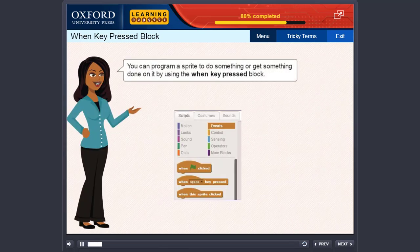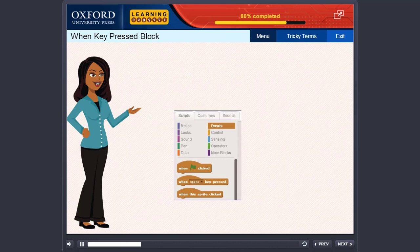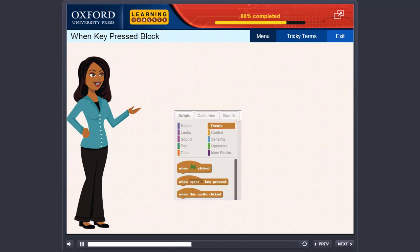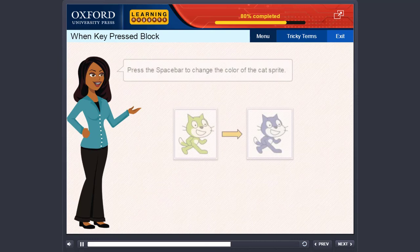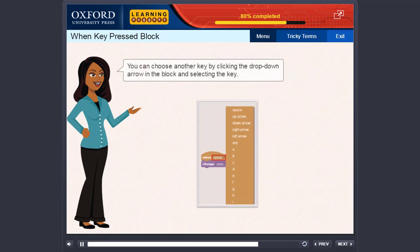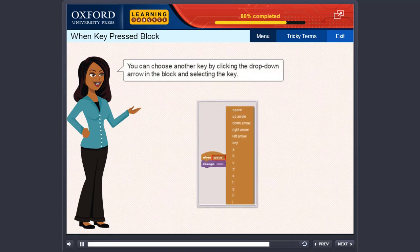You can program a sprite to do something or get something done on it by using the When key pressed block. Let us change the color of the cat sprite here by pressing the Spacebar key. Click the Events block category. Drag the When key pressed block to the Scripts area and snap it at the top. Press the Spacebar to change the color of the cat sprite. You can choose another key by clicking the drop-down arrow in the block and selecting the key.